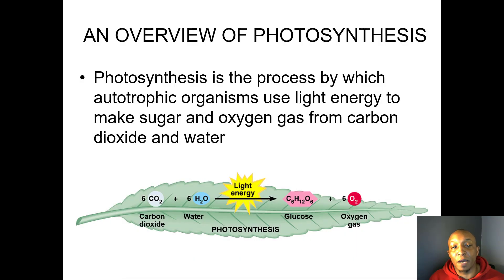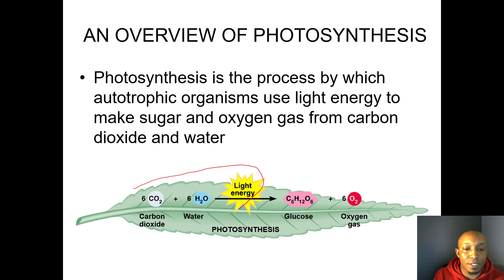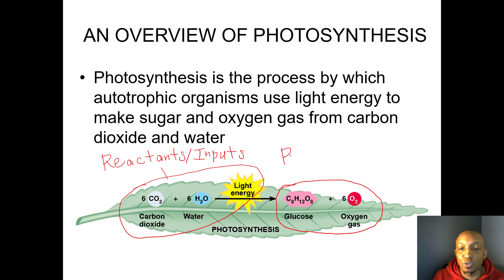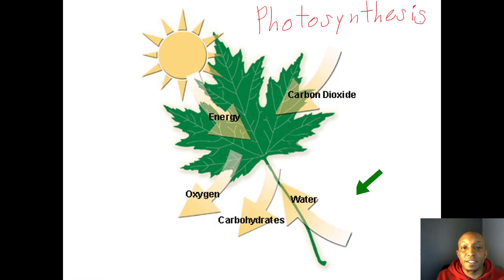Photosynthesis is the process by which autotrophic organisms use light energy to make sugar and oxygen gas from carbon dioxide and water. On the left-hand side of this equation, we have sunlight, water, and carbon dioxide — these are our reactants, or inputs. This is what plants need to make glucose, or food, for themselves. On the right-hand side are our products, or outputs: plants produce glucose and oxygen gas as a byproduct.